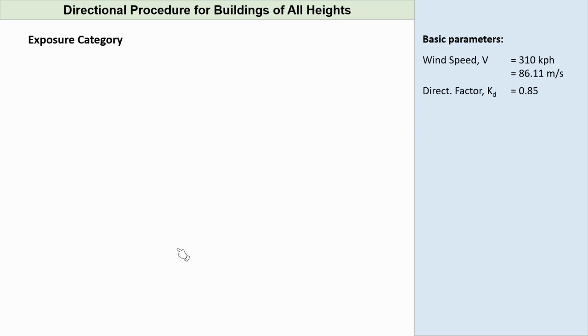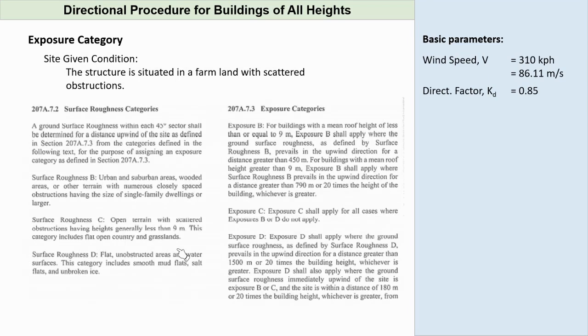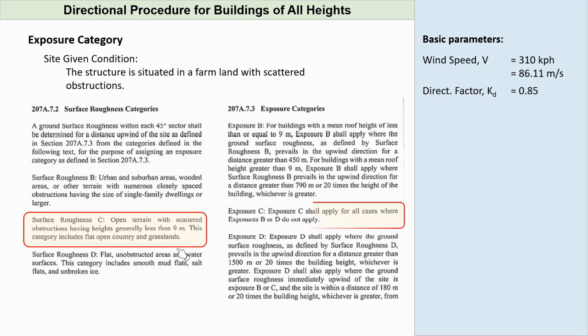The exposure category. Given our structure is situated in a farmland with scattered obstructions, the site most likely will fall under surface roughness C. Surface roughness C by definition means an open terrain with scattered obstructions having height generally less than 9 meters. This category includes flat open country and grasslands. Therefore, the best exposure category to describe our site is exposure C.